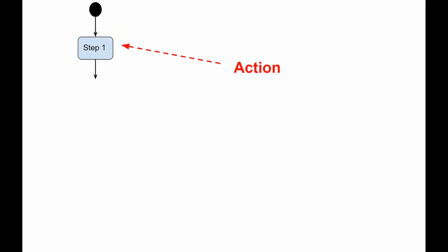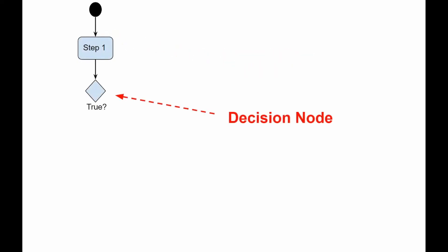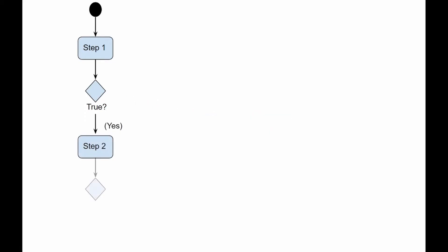Action: a task to be performed. Decision node: it represents a test condition to ensure that the control flow or object flow only goes down one path.